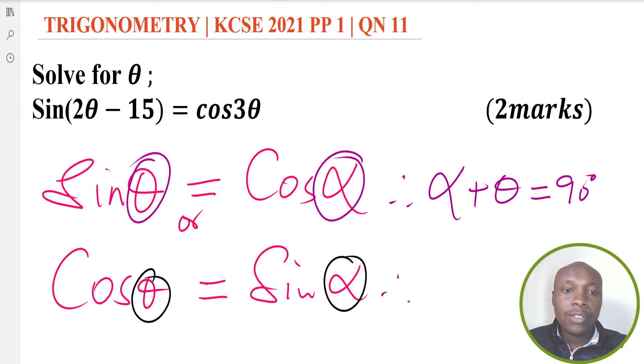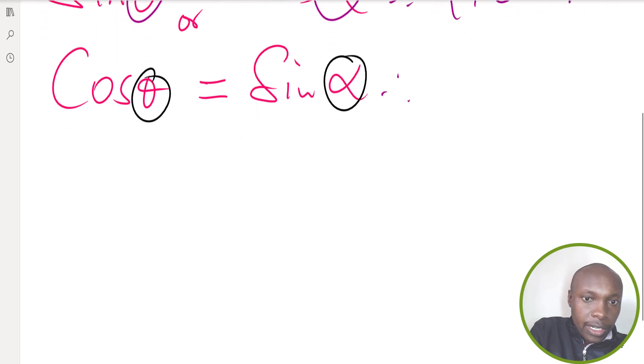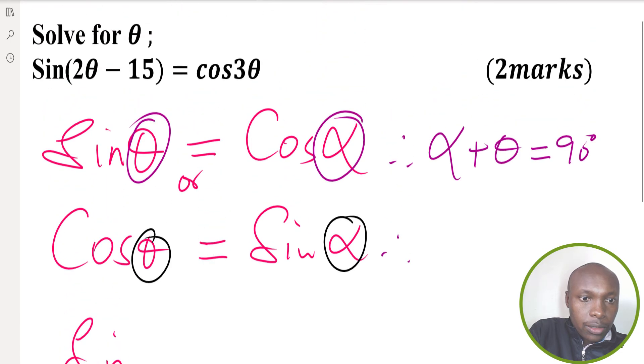Now we're going to apply that concept in solving this, and this is what we should know. When you look at this, let me write it here again: sine of 2θ minus 15, so 2θ minus 15 degrees, equals cosine of 3θ.